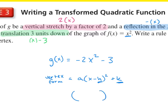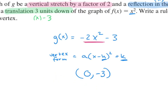Are we adding or subtracting anything inside our parentheses for g of x? No. So our first number in our vertex is zero — we don't have an h in our g of x. Are we adding or subtracting anything on the outside? Yes, minus 3. So our k is minus 3, and our vertex is going to be zero, negative 3.